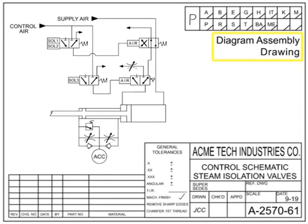A diagram assembly drawing shows installation of equipment using symbols and is often made in pictorial form. Diagram assembly drawings are typically used to depict wiring, piping, and other systems where scale models and dimensions are not required. Each part on a diagram assembly is indicated by a picture.